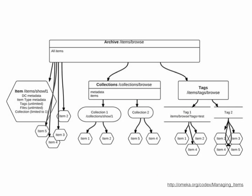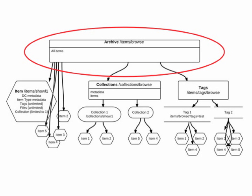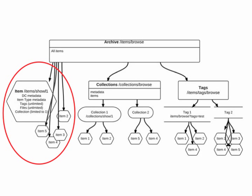Let's take a look at the diagram that comes from the Omeka documentation on managing items. What is represented at the top of this diagram is the archive — that is the set of all items that have been uploaded into an Omeka instance. Each item has associated with it Dublin Core metadata, metadata about the item type, tags, files, and collections, just like what's represented on the dashboard.